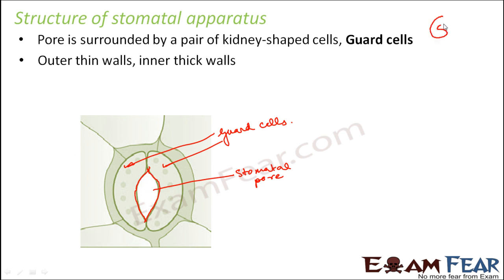When the stomata opens, the pore is quite big; when both guard cells come too close to each other, the pore is quite small. This is how the opening and closing of the stomata is governed by the guard cells. The guard cells change their shape due to a set of factors — we have discussed the opening and closing of stomata in previous lessons, but let us have a quick review.